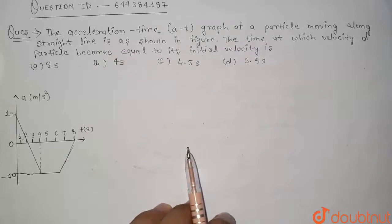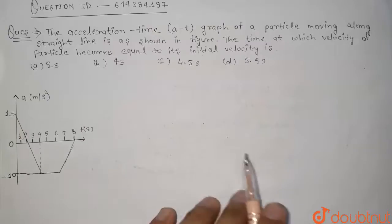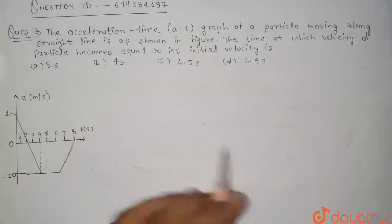Now in this question we have been given the acceleration time graph and we have to find the time at which velocity of particle become equal to its initial velocity.